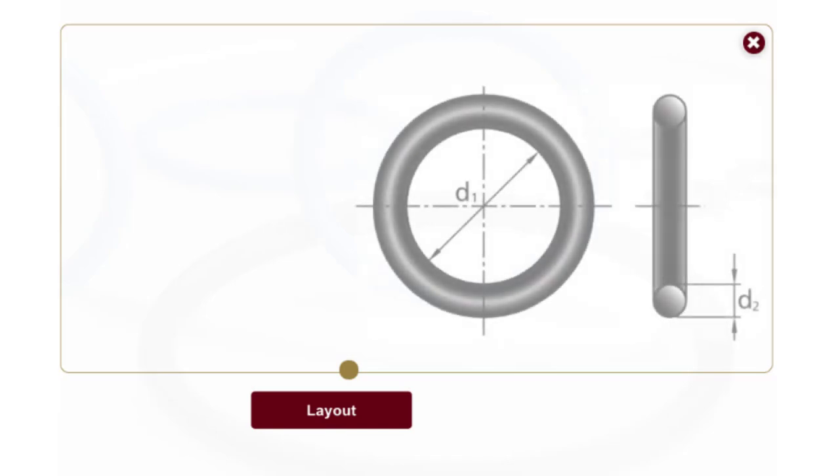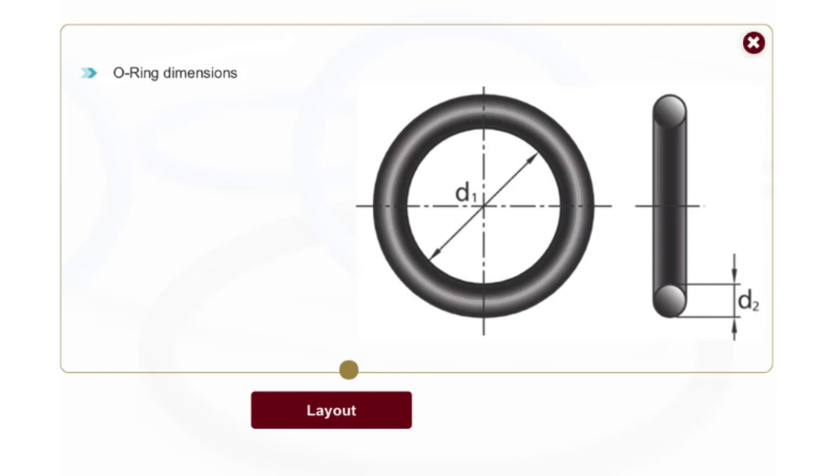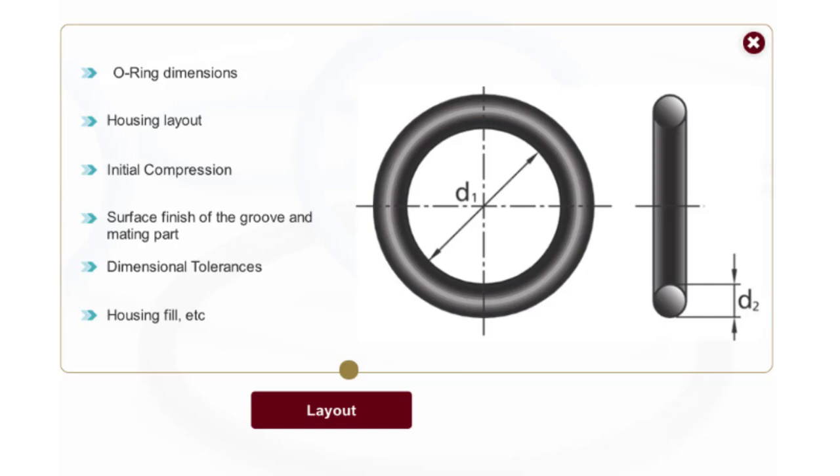An O-ring is defined by its inside diameter and cross-section dimensions. Additionally, the layout of the housing needs to be considered regarding initial compression and system pressure. The surface finish of the groove diameter, its side walls, and the mating surface also matter. To ensure correct installation, you must ensure rounded edges or lead-in chamfers.